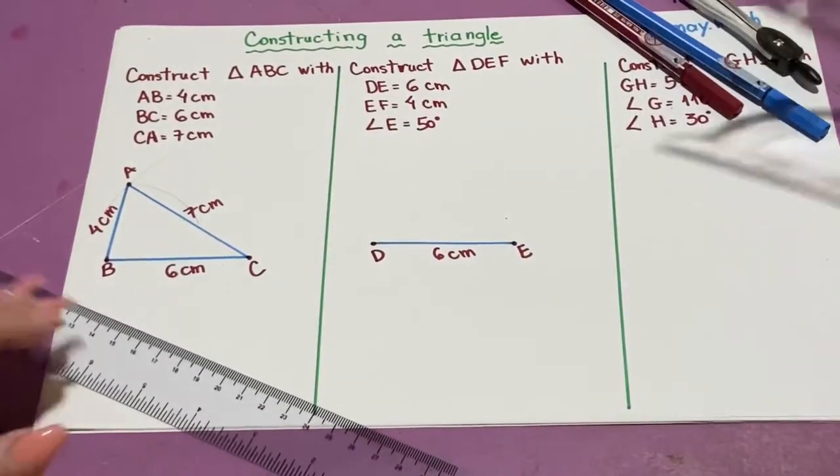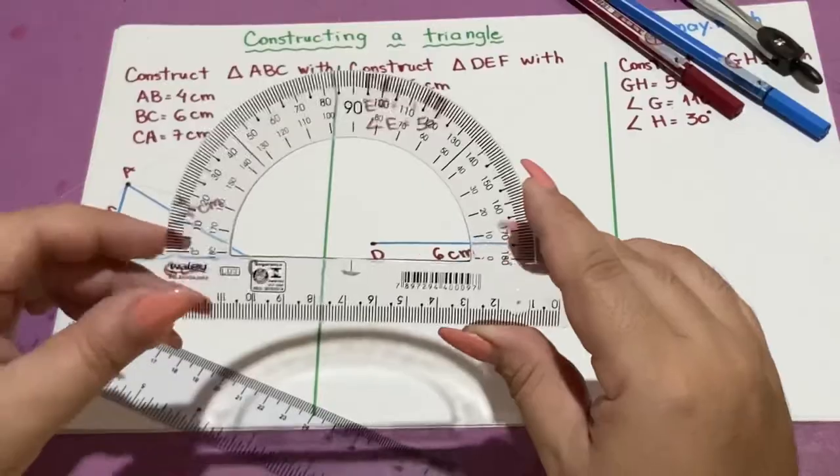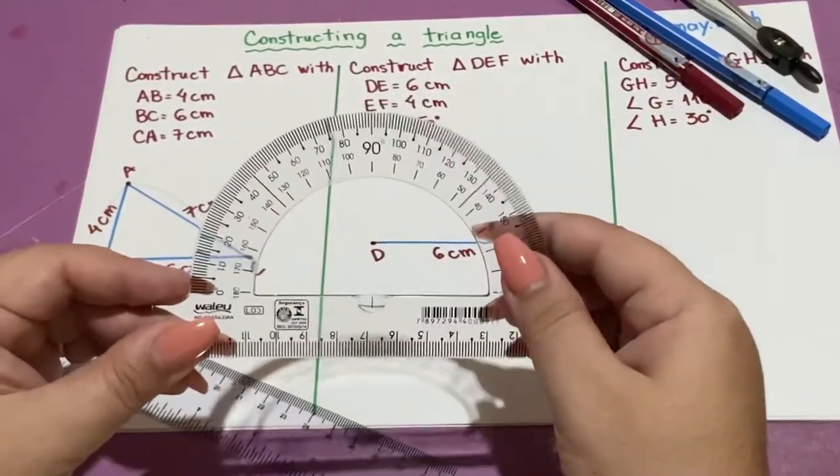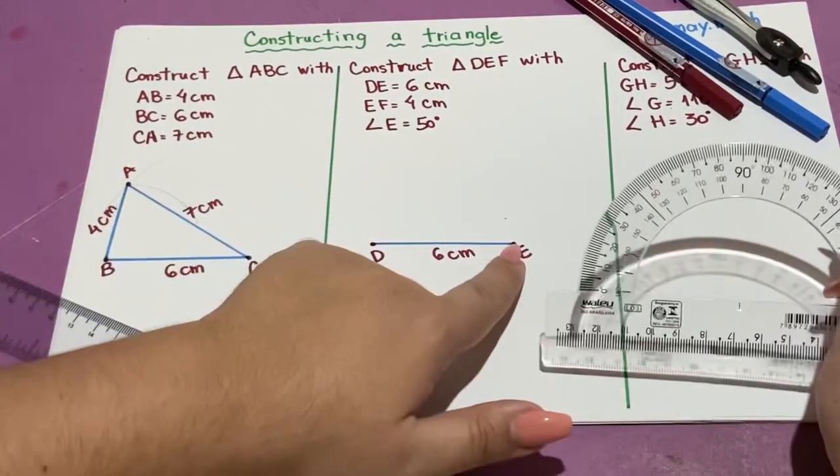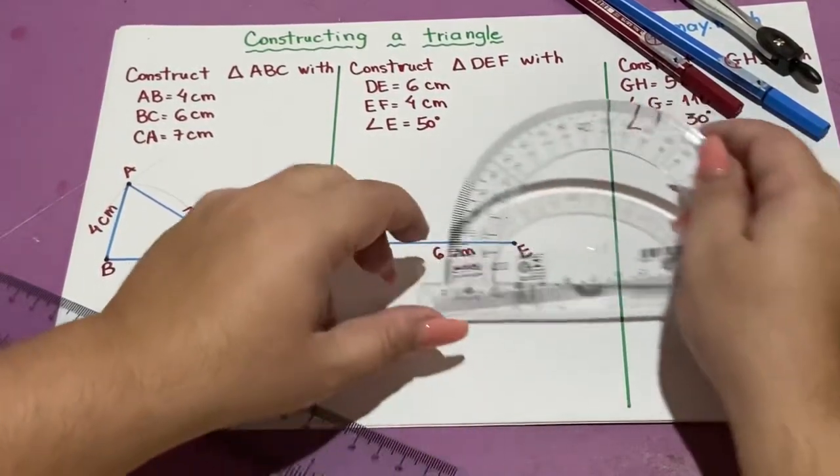This time I'm going to use the protractor to measure an angle of 50 degrees. 50 degrees is the angle E, so I'm going to start here on E.